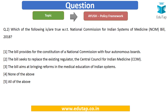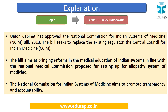Question 2: Which of the following is true with regard to the National Commission for Indian System of Medicine Bill 2018? The options include: the bill provides for a National Commission with four autonomous boards; it seeks to replace the existing regulator CCIM; and it aims at bringing reforms in medical education of Indian systems. The Union Cabinet has recently approved this bill, which seeks to replace the Central Council for Indian Medicine with a new National Commission.